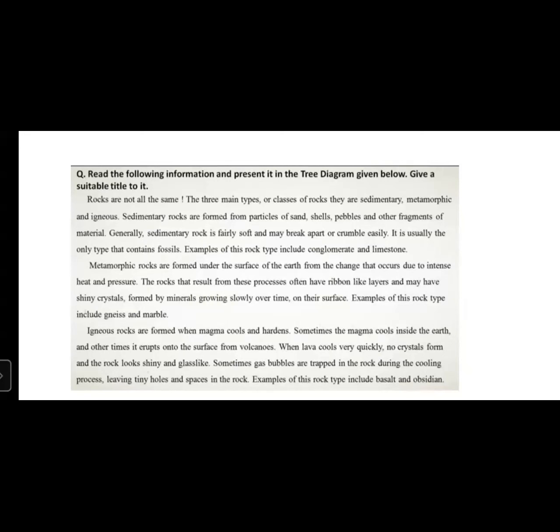The rocks are not all the same. The three main types or classes of rocks are sedimentary, metamorphic, and igneous. Sedimentary rocks are formed from particles of sand, shells, pebbles, and other fragments of material. Generally, sedimentary rock is fairly soft and may break apart or crumble easily. It is usually the only type that contains fossils. Examples include conglomerate and limestone.